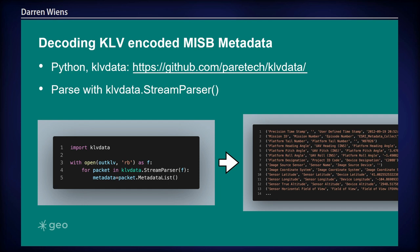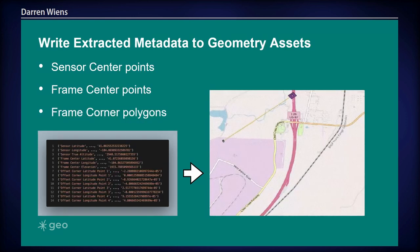A single metadata packet has around 50 or so different attributes for almost every video frame. Some interesting attributes include sensor latitude, sensor longitude, and sensor true altitude. We can pull out that metadata and store all of the sensor center points, frame sensor points, and frame corner points in external GeoJSON files using the sensor latitude, longitude, altitude, and frame corner lat/longs — all the metadata necessary to reconstruct the sensor orbit and rectangular video frame geometry.